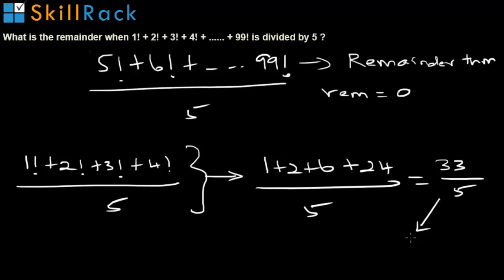The remainder when 33 is divided by 5 is 3. So the answer for the problem is 3.